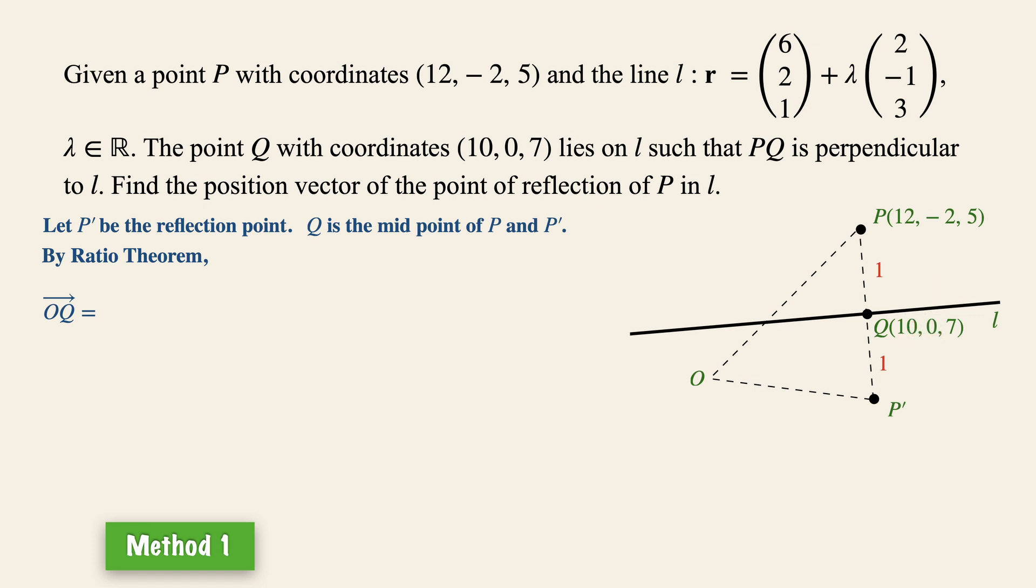Thus, the position vector of OQ is simply 1 multiplied by OP and 1 multiplied by the position vector OP', and this is divided by 1 plus 1, which is the combined total of the ratios.